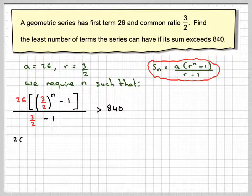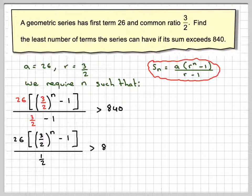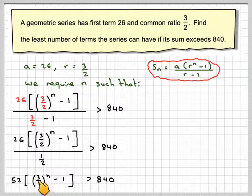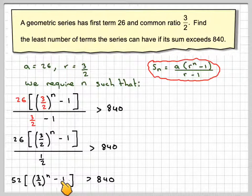3 over 2 minus 1 is a half. Let's just do it stage by stage. And then 26 divided by half is 52, times 3 over 2 to the power of n minus 1 is greater than 840.